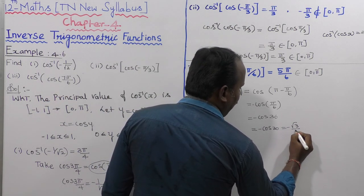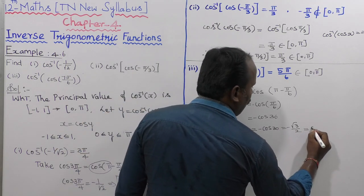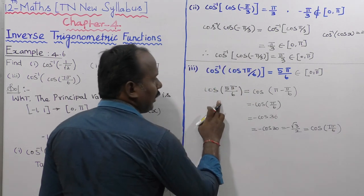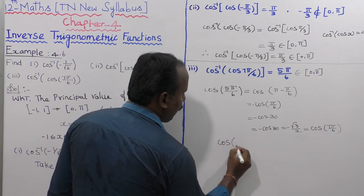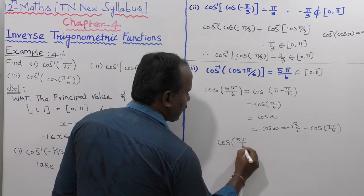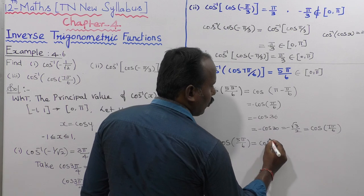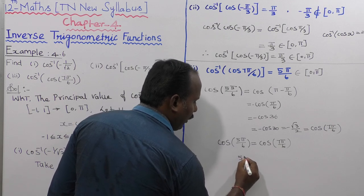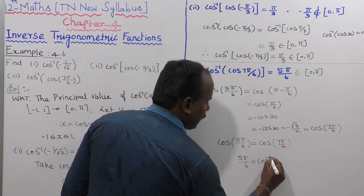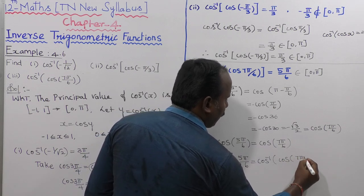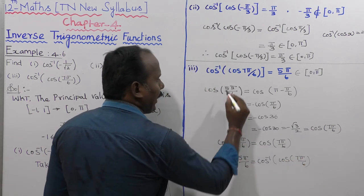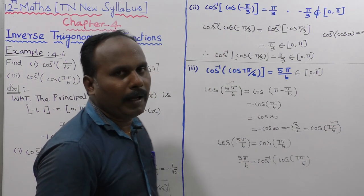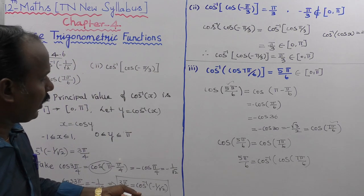So cos(7π/6) = -√3/2. And cos(5π/6) also equals -√3/2. Therefore cos(5π/6) = cos(7π/6), which implies cos inverse of cos(7π/6) = 5π/6. Since 5π/6 lies in [0, π], the answer is 5π/6.